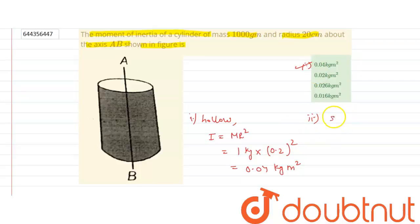If we take the cylinder as solid, the moment of inertia will be MR²/2. So mass is 1 kg, radius is 0.2 m, divided by 2, which equals 0.02 kg·m². So the second option is correct.